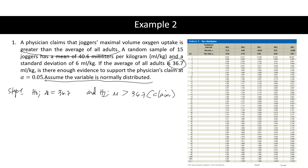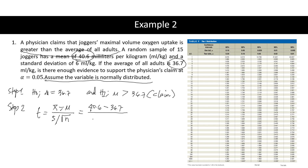Step 2: Compute the test value. The formula is t = (x̄ − μ) / (s / √n). The mean is 40.6, mu is 36.7, the standard deviation is 6 ml/kg, and n = 15. Plugging these into the calculator gives a test value of t = 2.517.